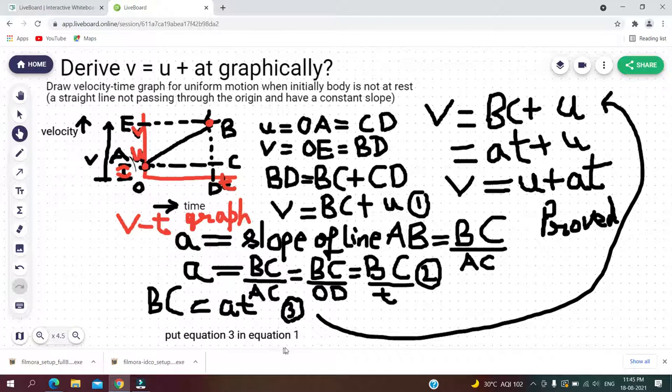Now we will put equation 3 in equation 1 and replace BC by a into t. v is equal to at plus u.